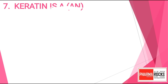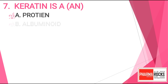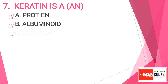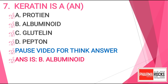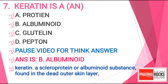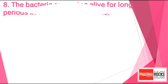Question 7: Keratin is a or an? Option A: protein, Option B: albuminoid, Option C: glutathione, or Option D: peptone. You may pause the video and note down your answer. The correct answer for this question is Option B, albuminoid. Keratin is a scleroprotein or albuminoid substance. It is found in the dead outer skin layer.